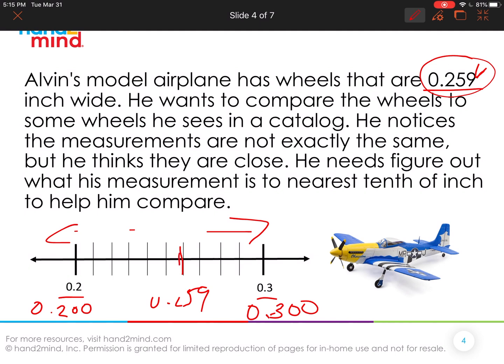So is this right here, is this closer to three tenths or is it closer to two tenths? Well, it's closer to three tenths. So that's another reason why 0.259 rounds to three tenths. Nice job.